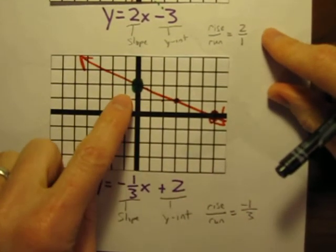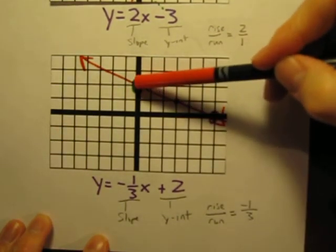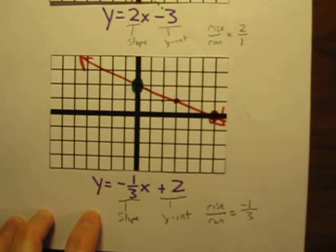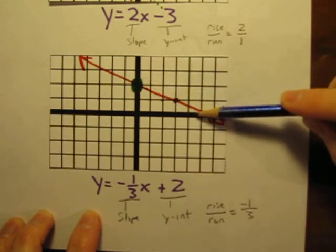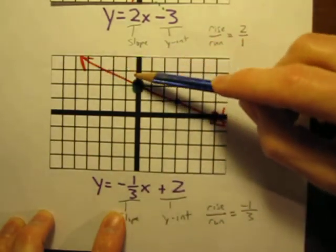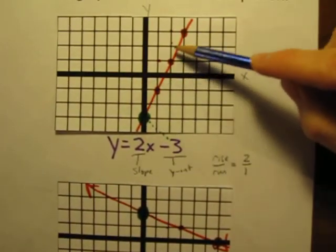So our line crosses the y-axis at positive 2. It is sloping down with a slope of negative 1 over 3. It's going down 1 over 3. Down 1 over 3. And there's our line. So negative slope means lines going down. Up here we had a positive slope, so the line is going up.